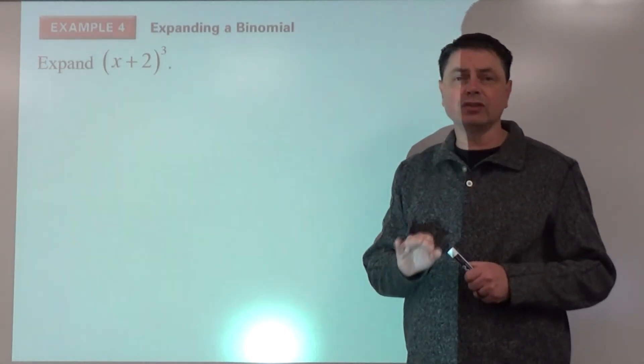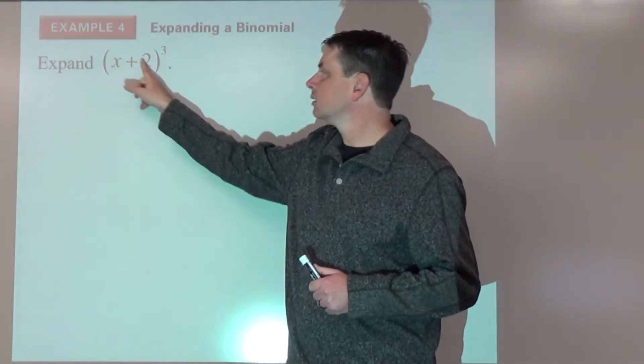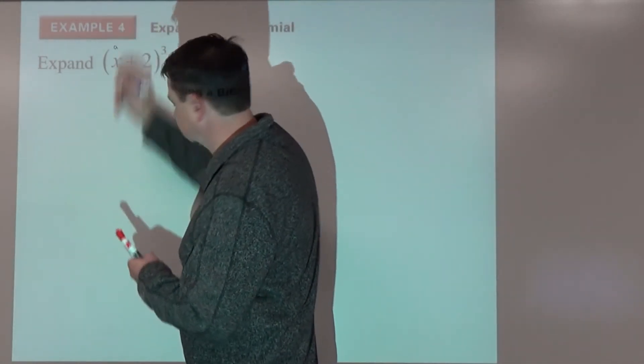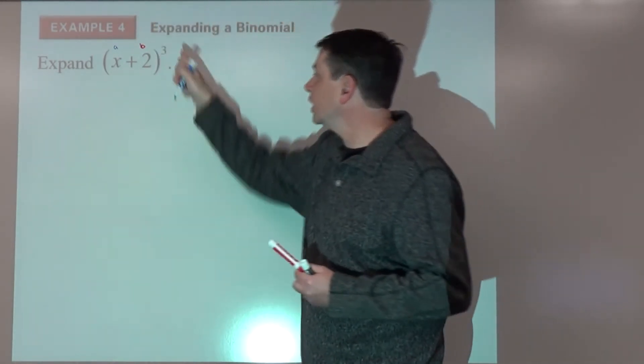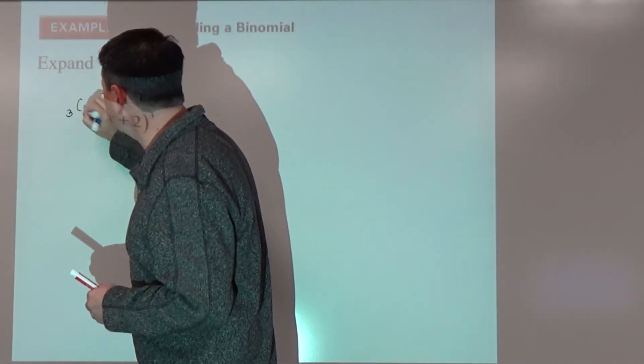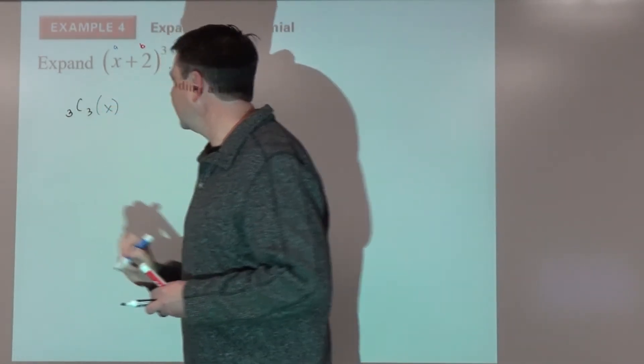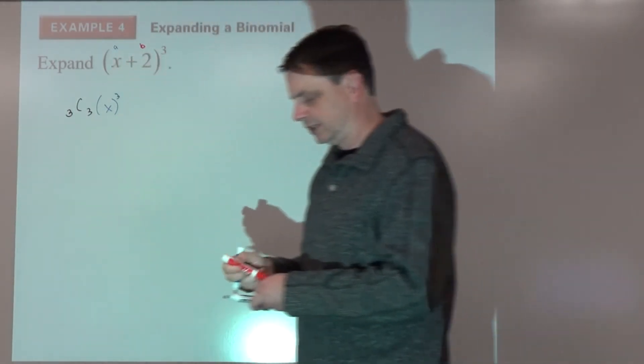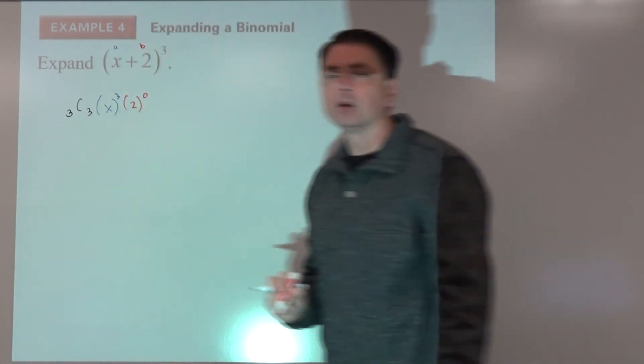So each term is going to contain three things: the combination, a part, and the b part. So our combination, since it's to the third power, we're going to start with 3 choose 3, times a to the power of 3, times b to the power of 0.